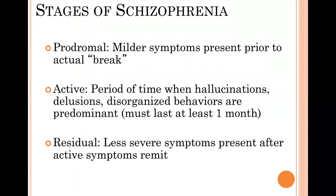Schizophrenia rarely comes on as a continuous period of active psychosis with nothing else. Instead, it has stages. Typically, the first stage is the prodromal phase. Here you start to see changes, but the symptoms are much more mild than what's coming down the road. They might have three months where they stay in bed most of the day and are no longer very talkative. They may start to do some things that seem odd or peculiar.